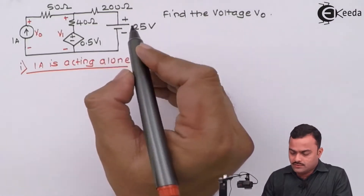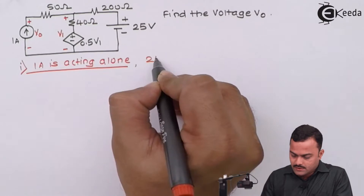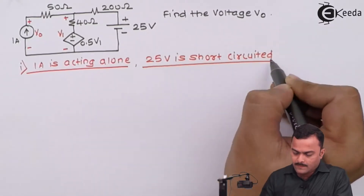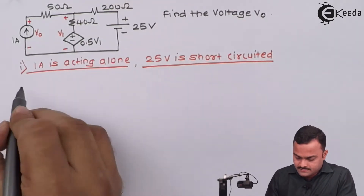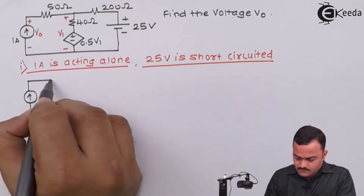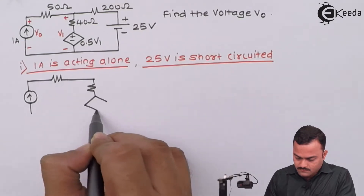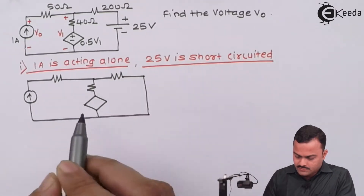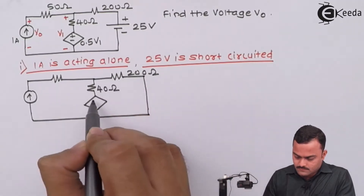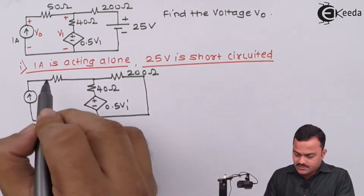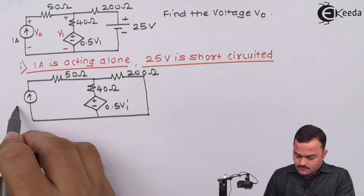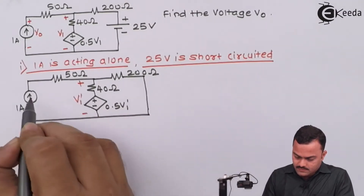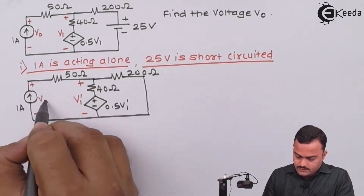What will happen: the 25V voltage source will be short-circuited. So 25V is short-circuited and the circuit will get modified. Let's draw the modified circuit. Short circuit means replace the source by a wire, so we will get a circuit like this. V1' will be this, and we have to get the voltage V0'.